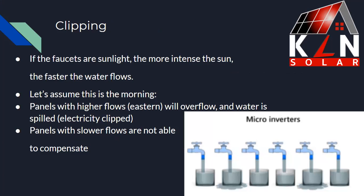Here's another way to think about this. Think of each faucet as the sunlight — the more intense the sun, the faster the water is flowing — and think of each cup below it as a microinverter. Each cup can only hold so much water. In the morning, the east-facing panels have a higher flow and overflow, meaning they're putting out more energy than the cup or microinverter can handle, and that excess is lost. Your west-facing panels in the morning are flowing slower and not even filling up, but they can't compensate for the east-facing ones. Where your east-facing panels are over capacity and losing extra energy, your west-facing panels are under capacity. This is clipping in a nutshell.